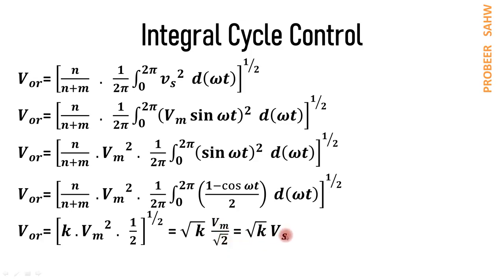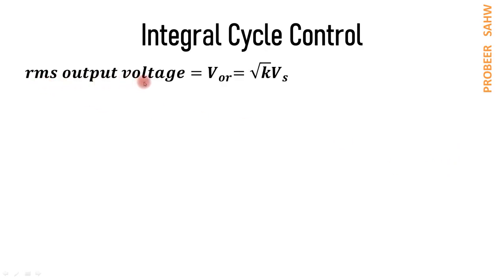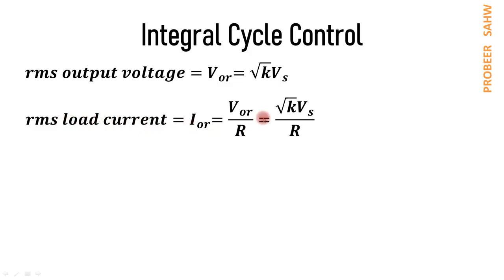Since Vm/√2 is the RMS supply voltage Vs, the RMS output voltage is V_or = √K × Vs, where √K is the square root of the duty cycle. The RMS load current (RMS output current) is then I_or = V_or / R = √K × Vs / R.